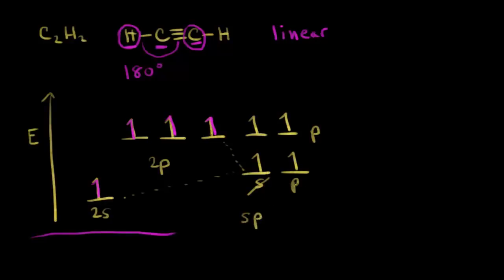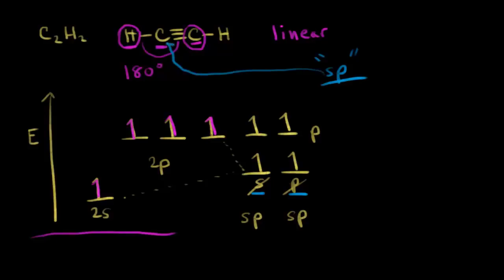We hybridize the s orbital with the one p orbital to make an sp hybrid orbital. This is called sp hybridization because our new hybrid orbitals came from one s orbital and one p orbital. So this carbon in acetylene is sp hybridized since it's bonded to two atoms, and the other carbon is also sp hybridized.